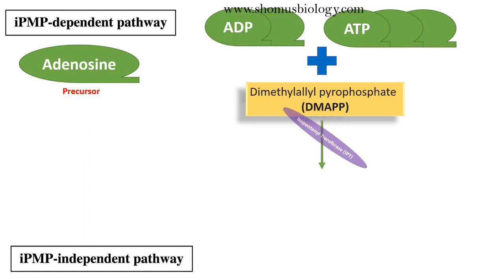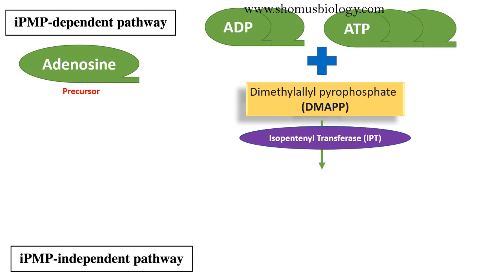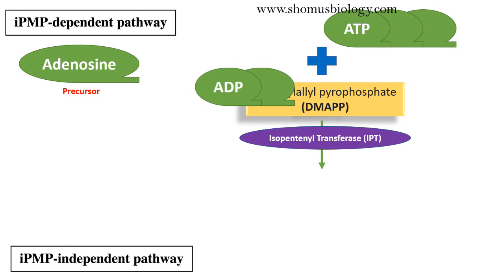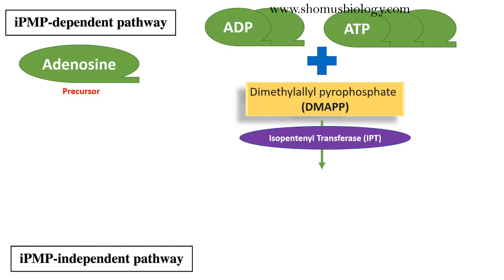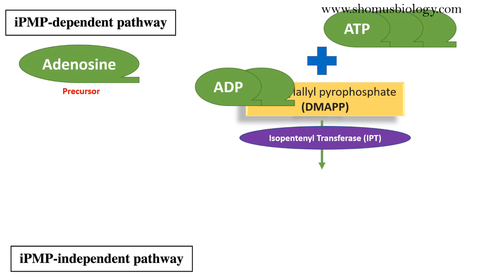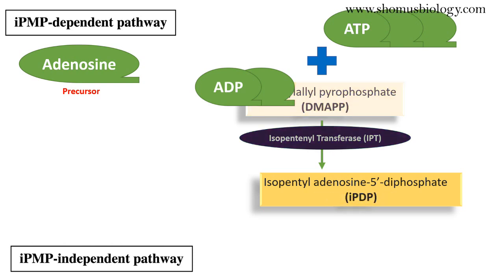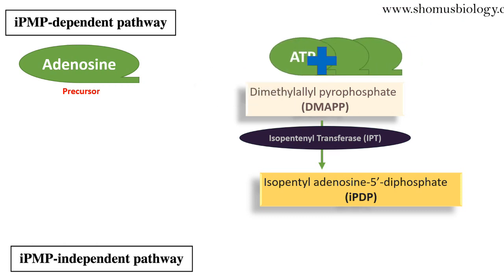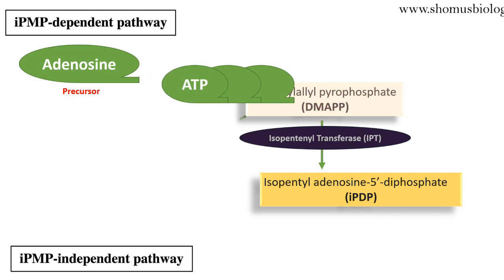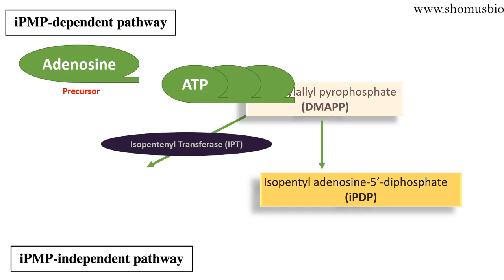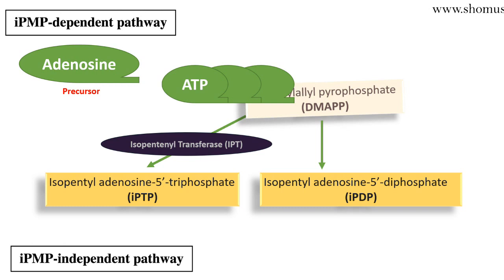Once DMAPP is produced, it will be converted by isopentyl transferase enzyme, or IPT enzyme, into other different forms. This IPT will involve both DMAPP with either ADP or DMAPP with ATP. If ADP is associated with DMAPP, then isopentyl transferase enzyme will convert it into isopentyl adenosine 5-diphosphate, or IPDP. If DMAPP is associated with ATP, then the same enzyme IPT will convert them into isopentyl adenosine 5-prime triphosphate, or IPTP.